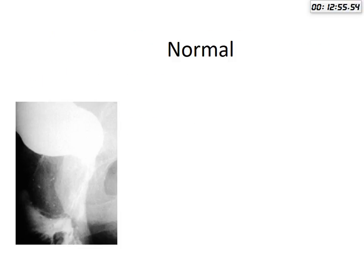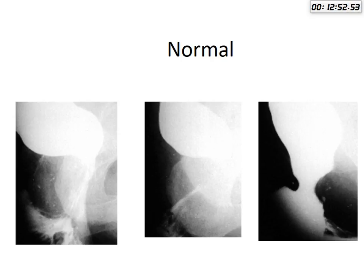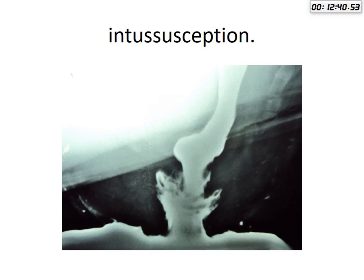This is a normal series of defecography — shown at rest, during squeeze, and during evacuation. This is anterior outpouching, which is a rectocele, also demonstrated as an anterior rectocele in defecography.